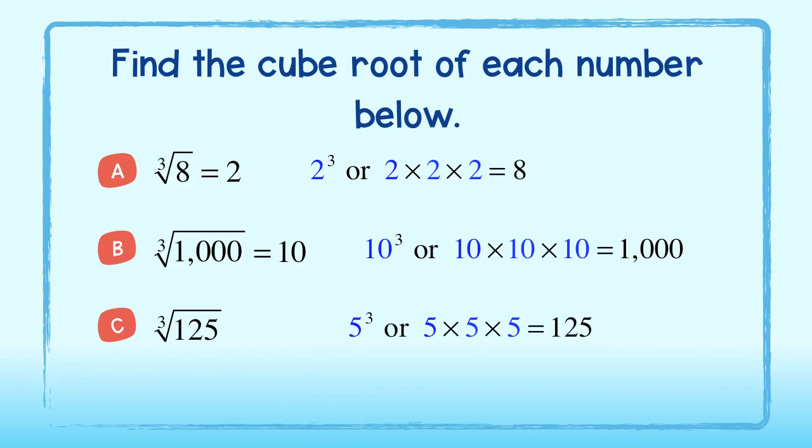Since 5 cubed, or 5 times 5 times 5 is equal to 125, the cube root of 125 is 5.